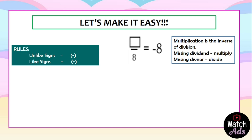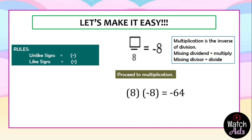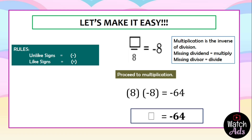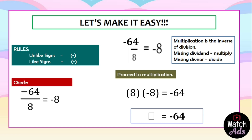For this example, the missing piece is the dividend. For a missing dividend, we multiply the divisor and the quotient. Positive 8 multiplied by negative 8 is negative 64 because they are unlike signs. Therefore the answer is negative 64. We check: negative 64 divided by 8 — they are unlike signs, so the final answer is negative 8. Our answer of negative 64 is correct.